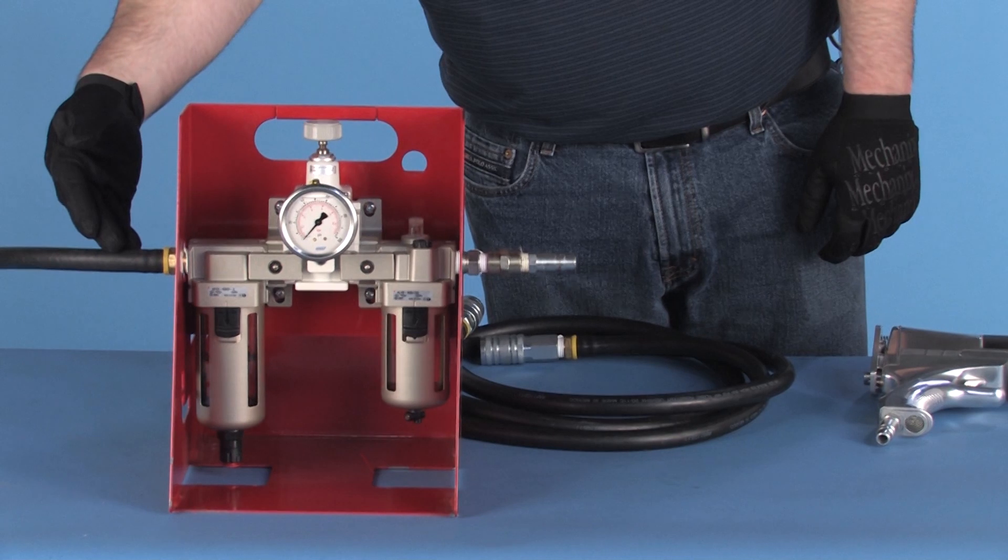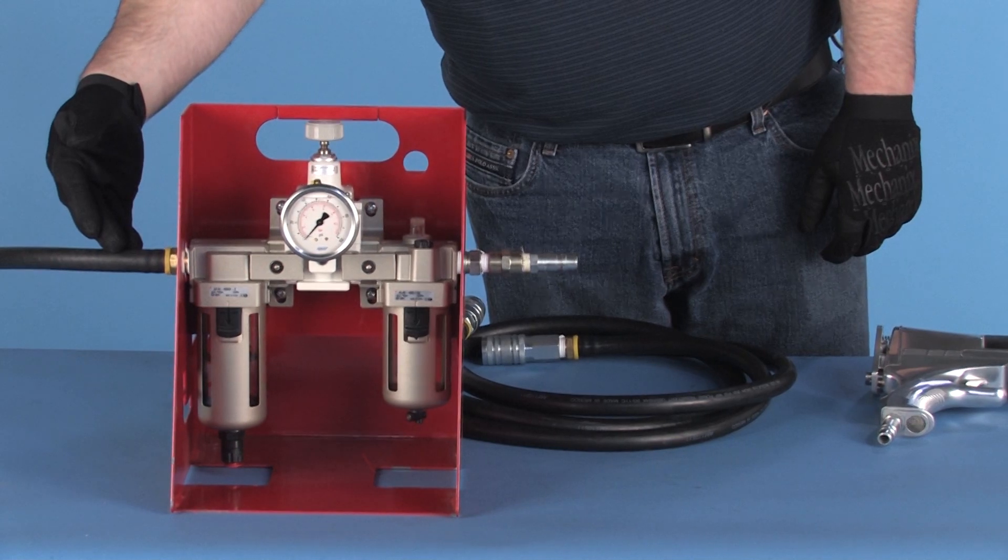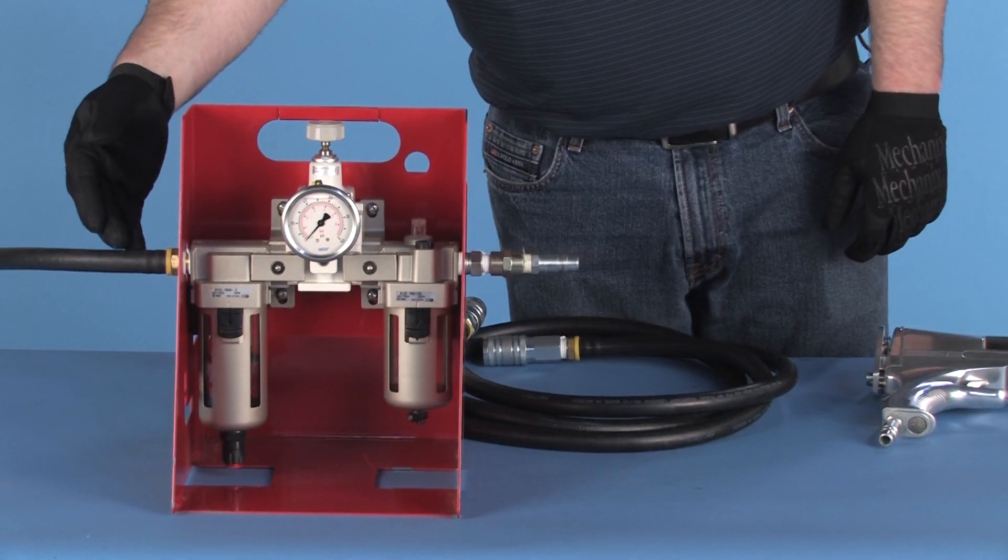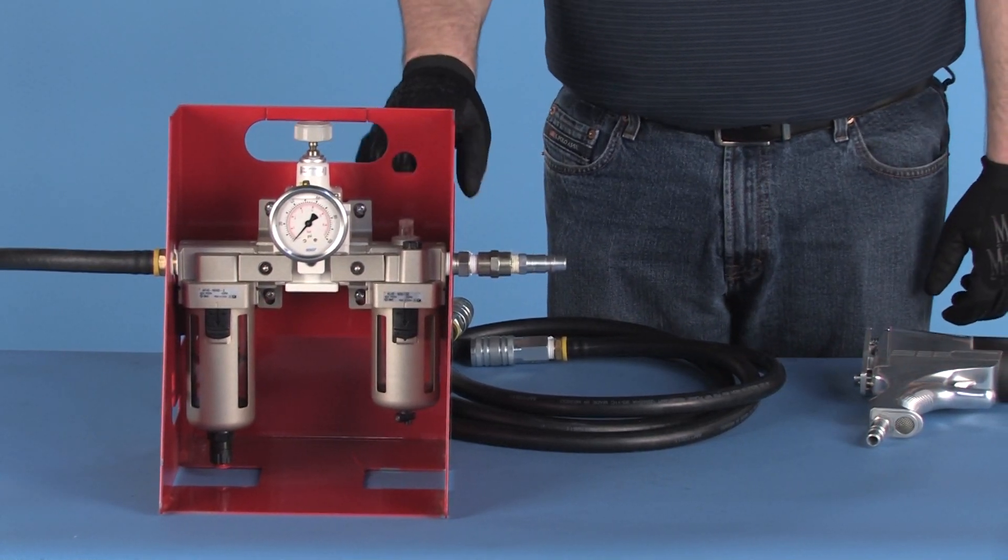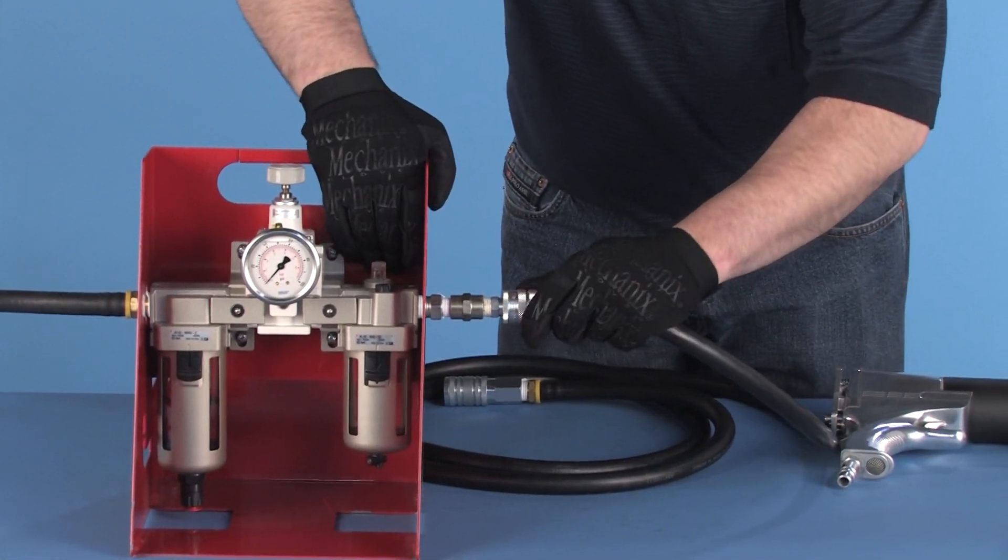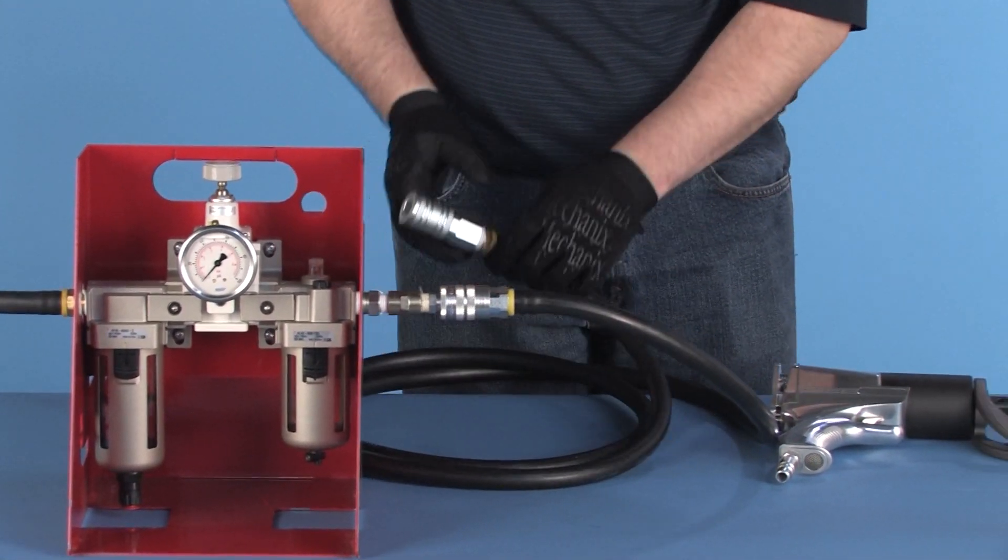The supply hose should be connected to the input side of the pressure regulator assembly with any connector compatible with your air system. Connect the J-GUN's air hose to the output side of the regulator, and snap on the J-GUN with a quick disconnect coupler.